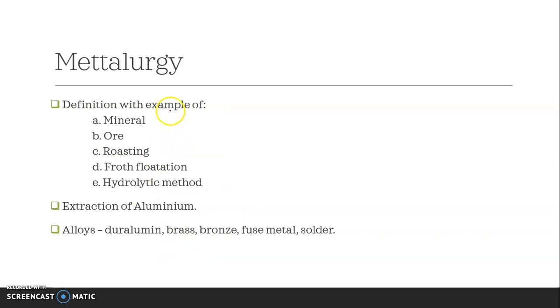Coming to metallurgy: definition with examples of mineral, ore, roasting, froth flotation and hydrolytic methods. You have to do the extraction of aluminum. From alloys, do duralumin, brass, bronze, fuse metal, solder. All this stuff.